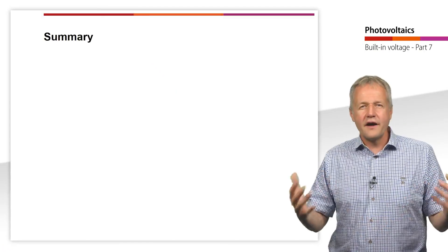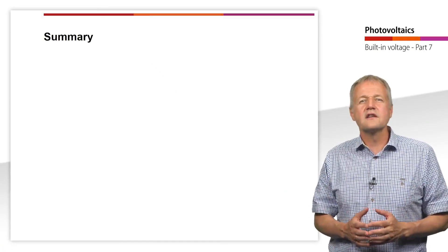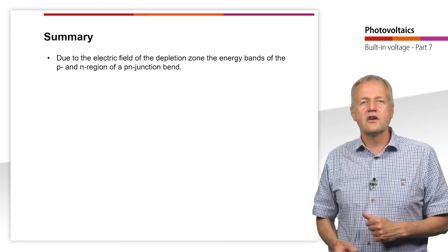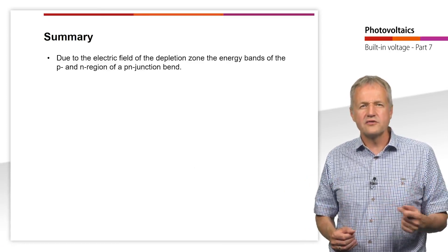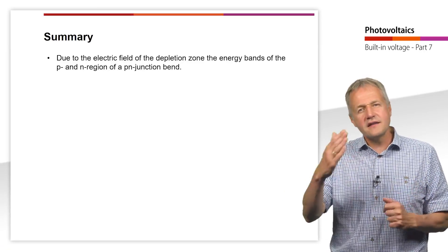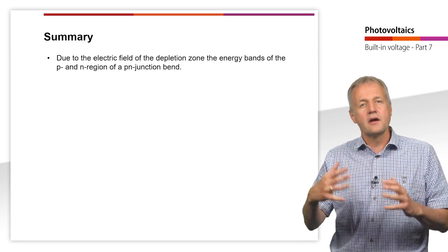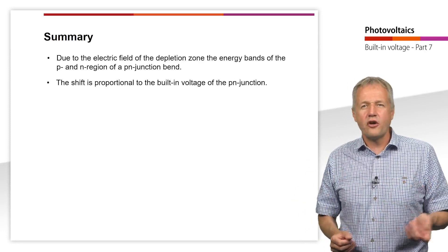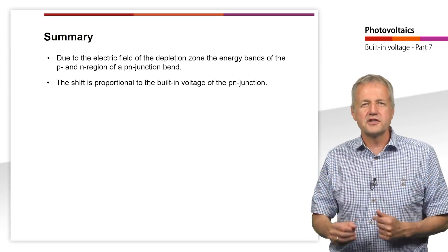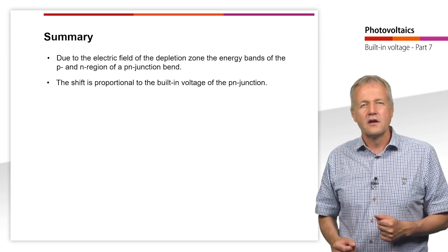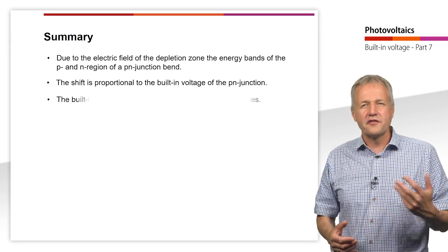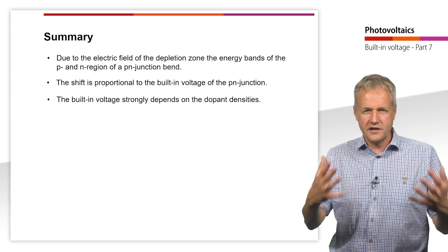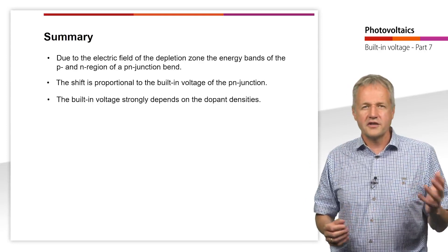Let us summarize what we learned in this unit. We have seen that in a p-n junction, due to the electric field of the depletion region, the energy bands of the p-n region bend. The band bending is proportional to the built-in voltage of the p-n junction. Most importantly, we have seen that the built-in voltage strongly depends on the dopant densities. Thank you for your attention.